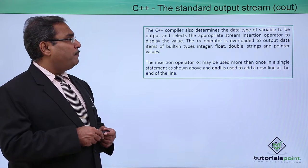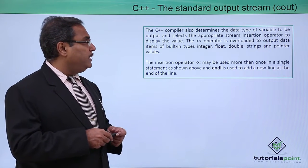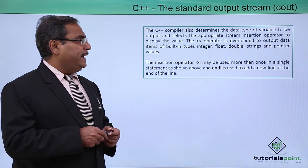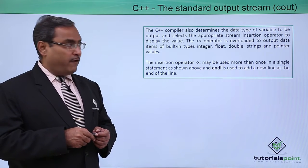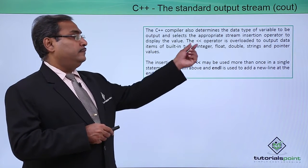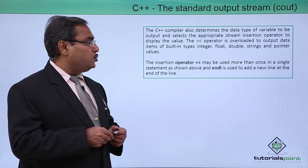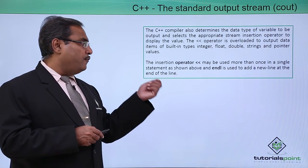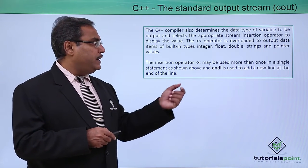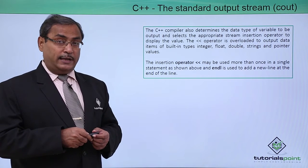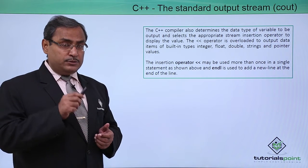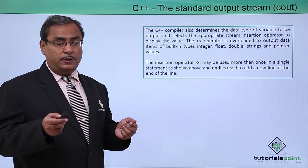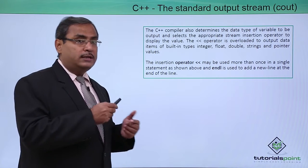The C++ compiler also determines the data type of the variable to be output and selects the appropriate stream insertion operator to display the value. The insertion operator is overloaded to output data items of built-in types — that is, integer, float, double, string, and pointer values as well. That is why using this insertion operator we can pass integer, long double, and other data types to Cout.